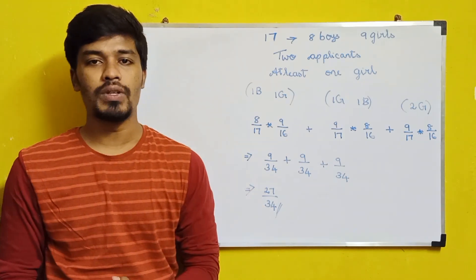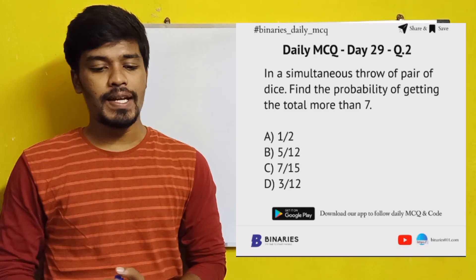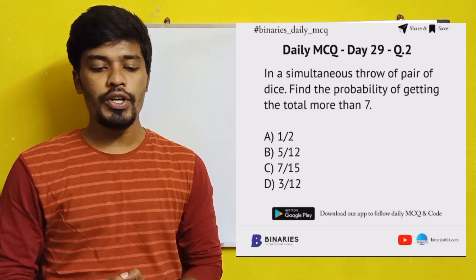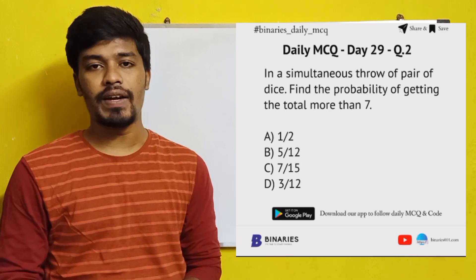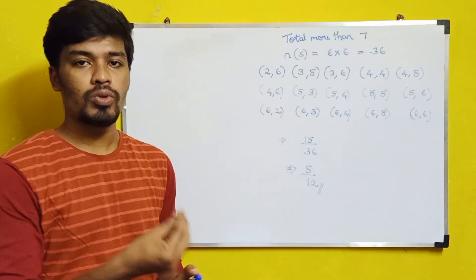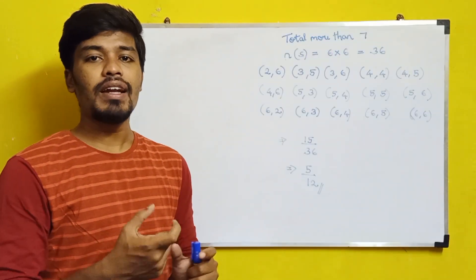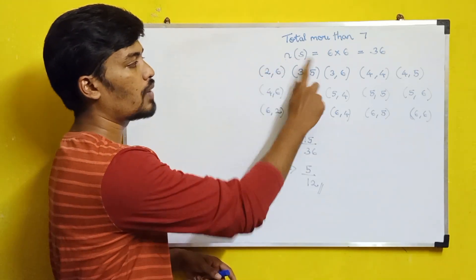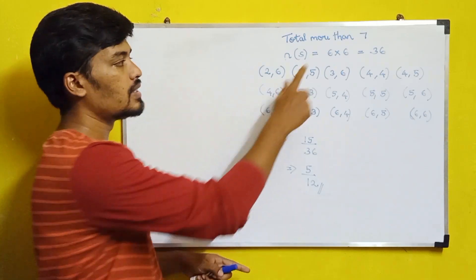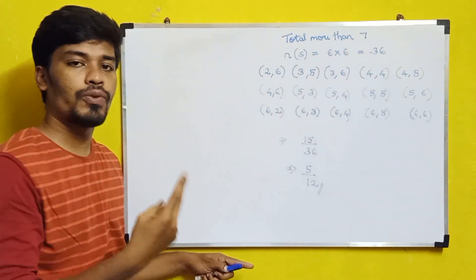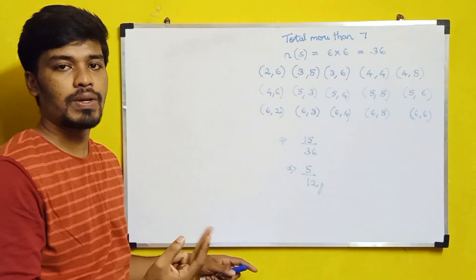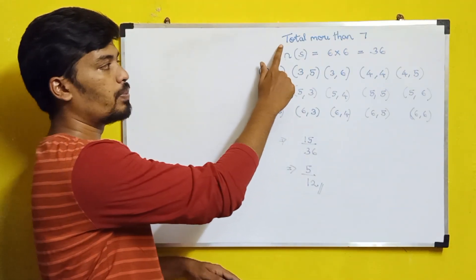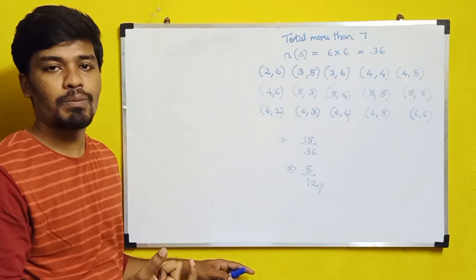The next question: in a simultaneous throw of a pair of dice, find the probability of getting a total more than 7. They are throwing a pair of dice and the total value should be more than 7. When throwing a pair of dice the number of sample spaces is 6 × 6 = 36. So the total sample space is 36.